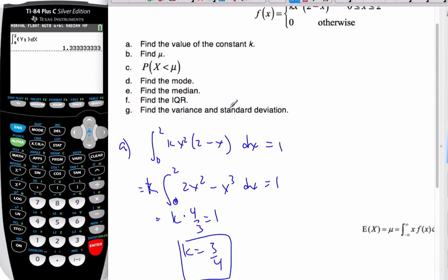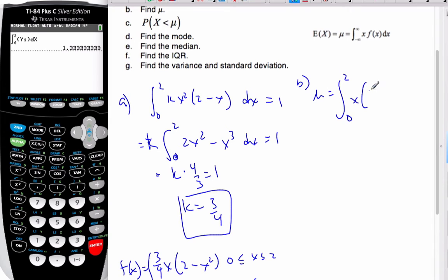Okay, so move along. I want to find mu now. So if I want to find mu, well, in order to find mu, I have this formula for my formula booklet. I want to find the expected value, so I'm going to go mu, this is b part, is going to equal to, well, from 0 to 2 of x times my probability generating function, 3 quarters x (2 - x) squared dx.